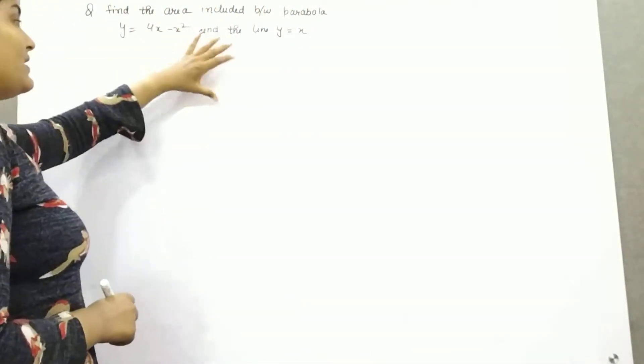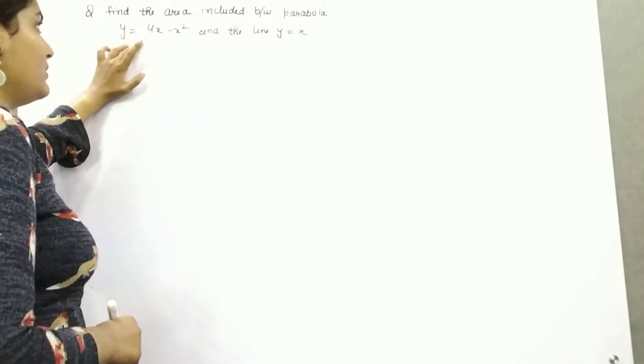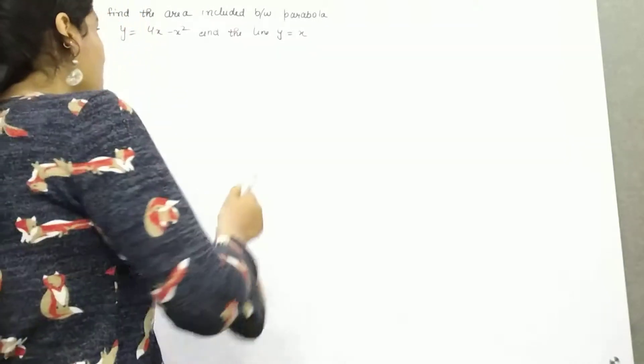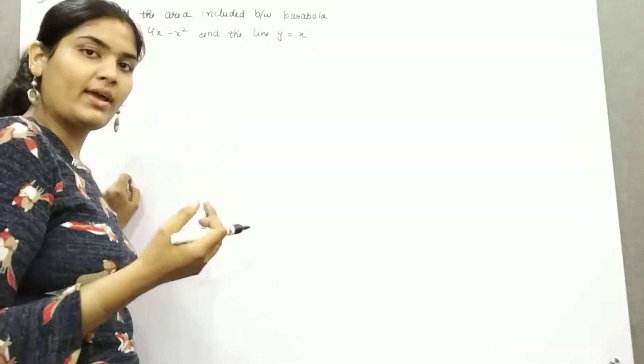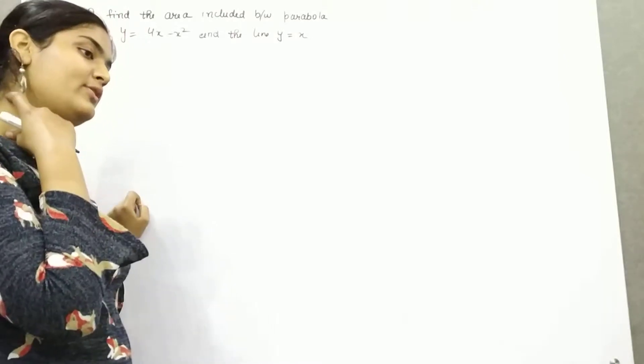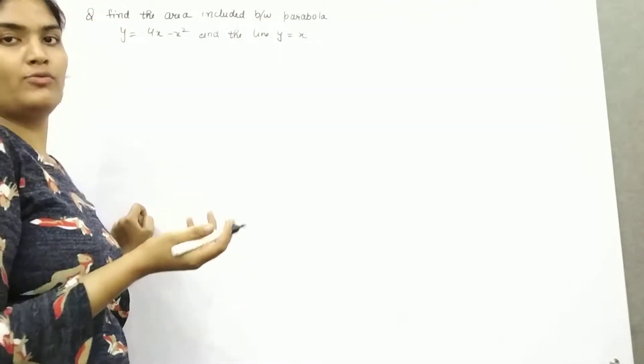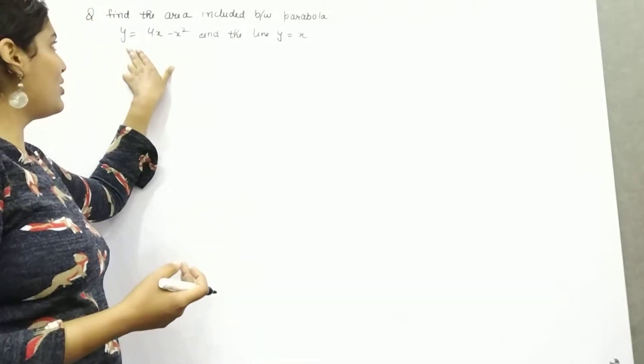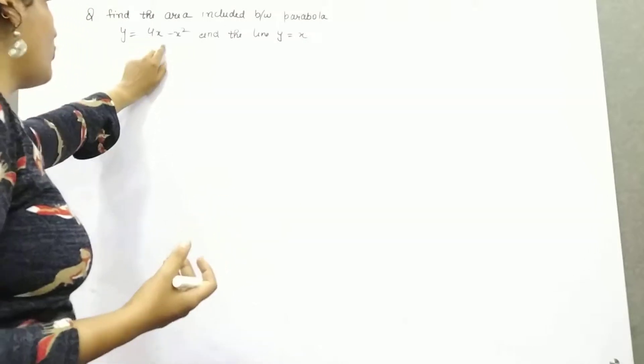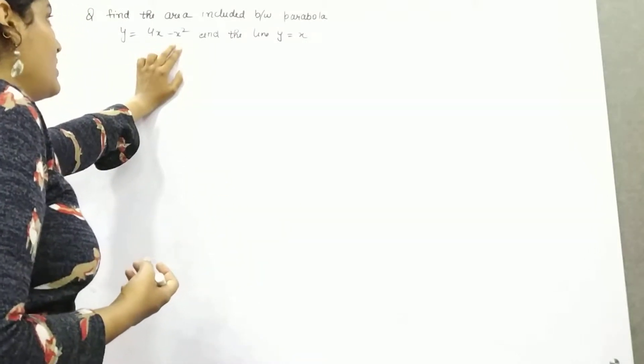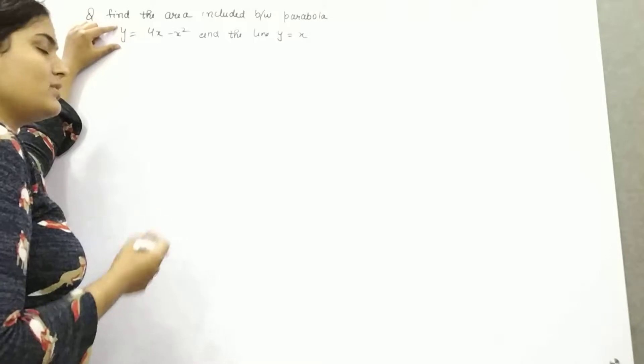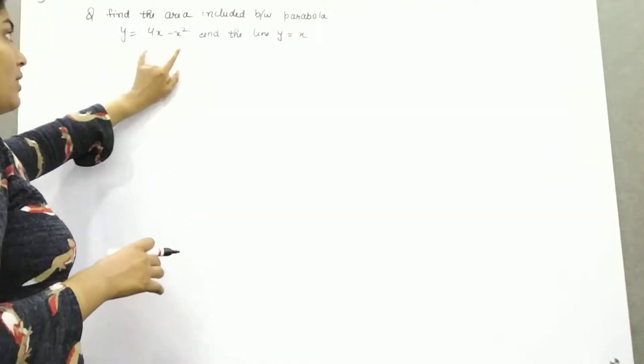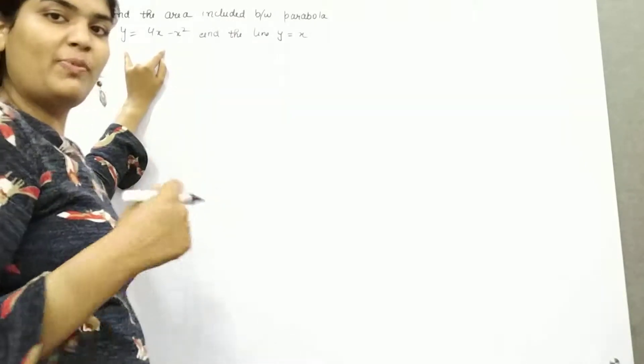First of all draw the figure. If it would be y squared equals 4x or x squared equals 4y then we know how we can make the figure of parabola. But this is in the form of y equals 4x minus x squared. We can easily understand that this is symmetrical to y axis because y is in odd powers and x is in even. But what type of parabola is it?